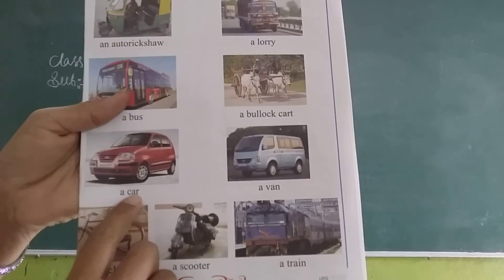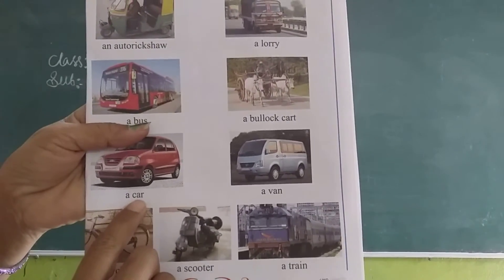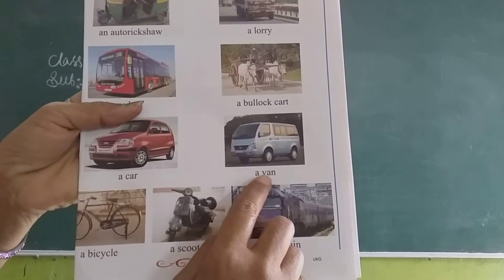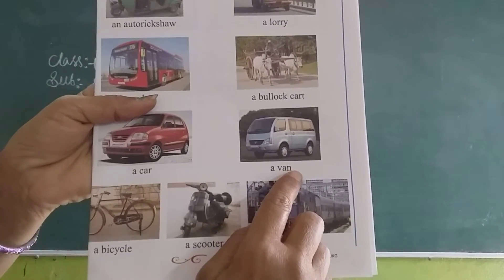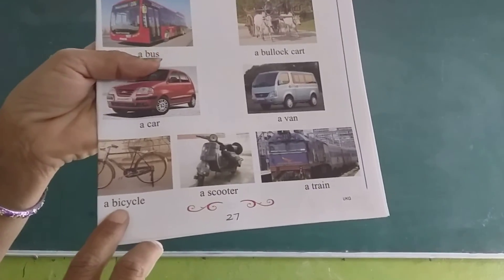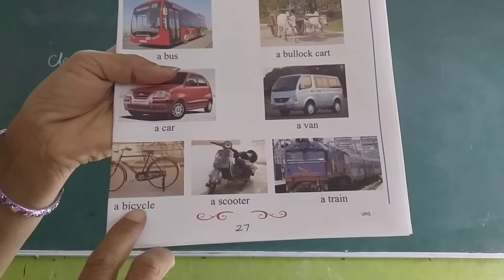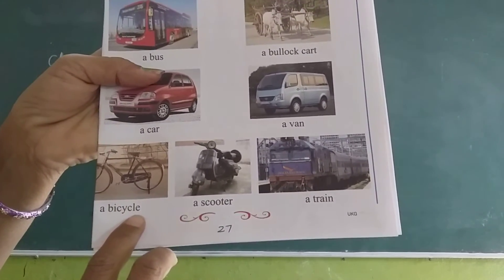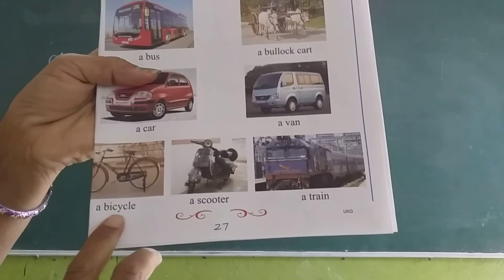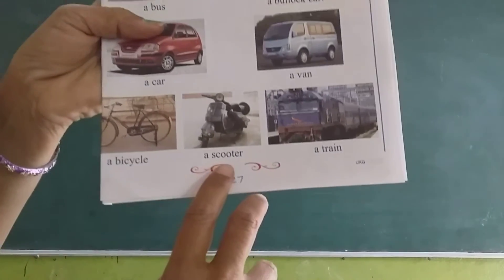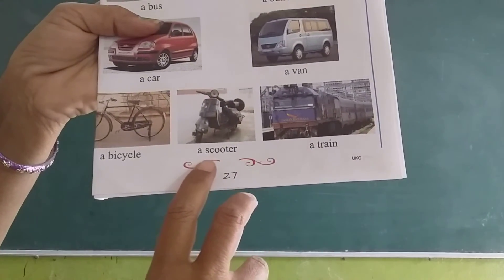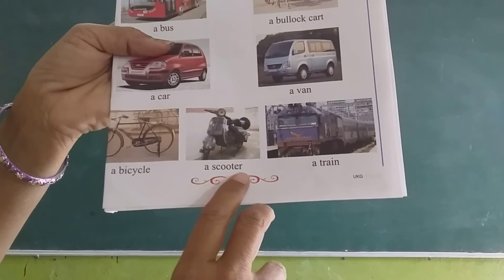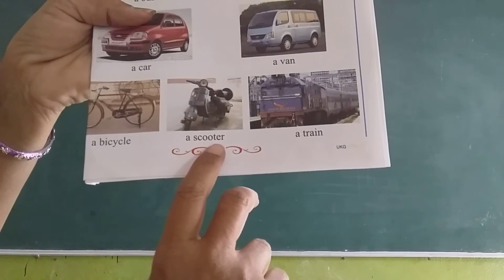Next: Car. C-A-R. Car. Van. V-A-N. Van. And next one is Bicycle. B-I-C-Y-C-L-E. Bicycle. Next: Scooter. S-C-O-O-T-E-R. Scooter.